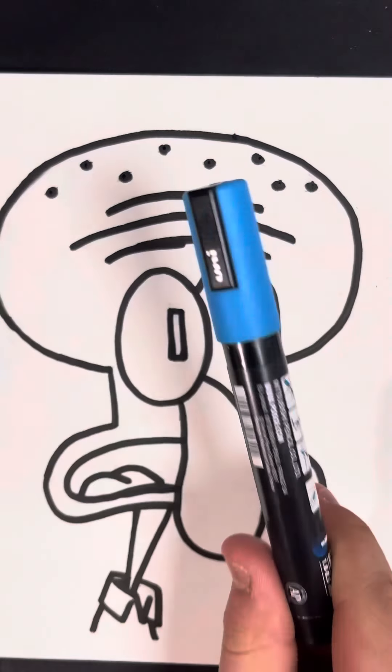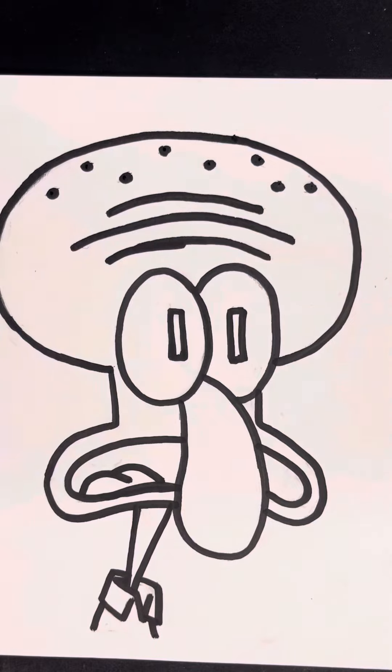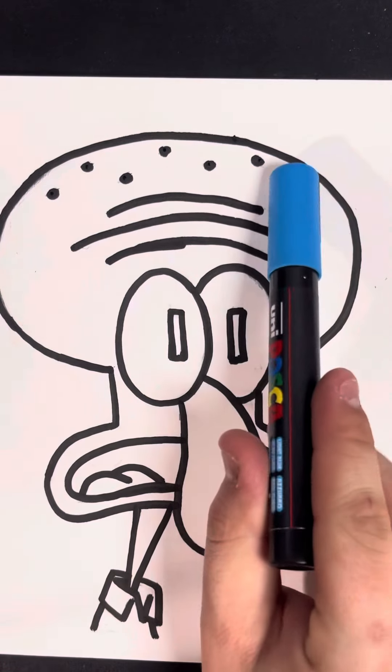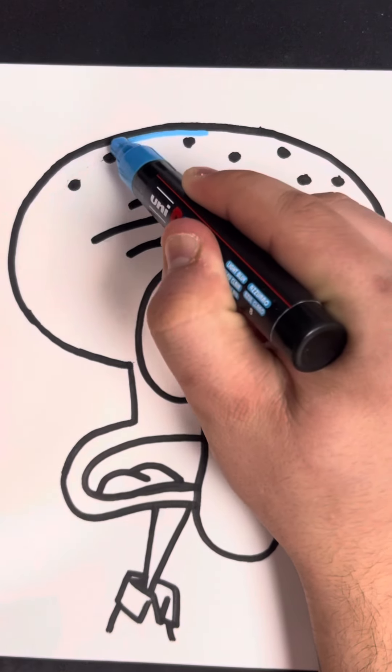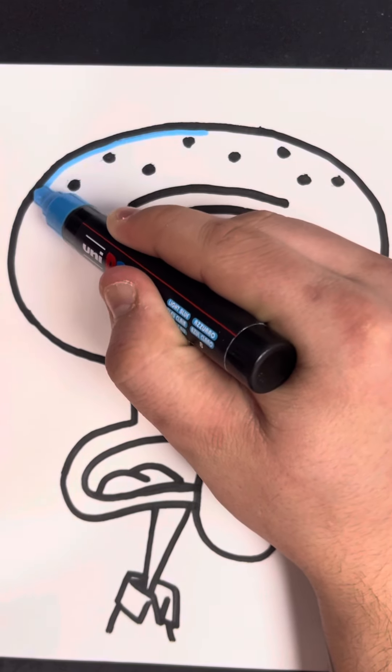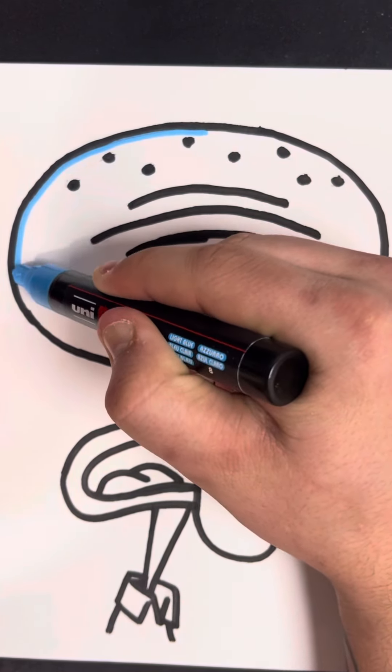Once you are done outlining your image black, grab one of your either red or blue markers and we're going to start right now. Now that you have the black outline completed, grab your blue marker and start outlining the inside of his head.